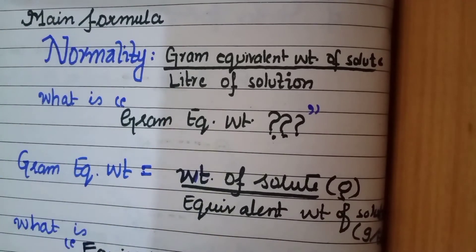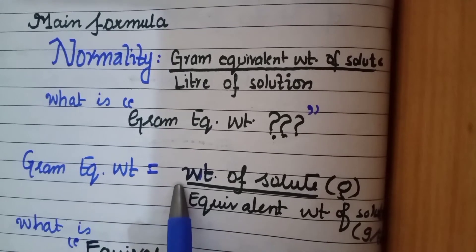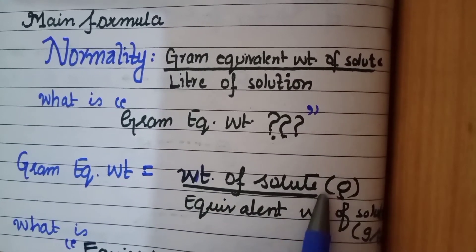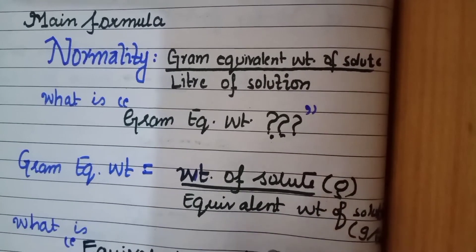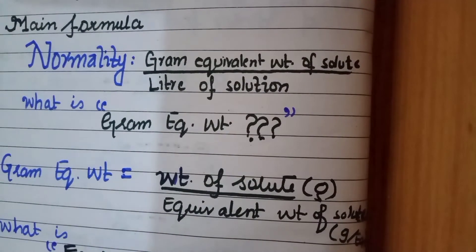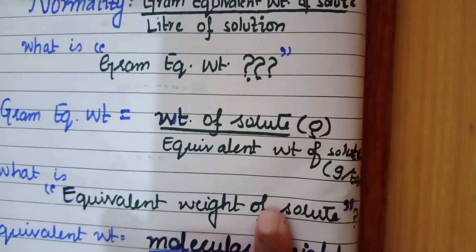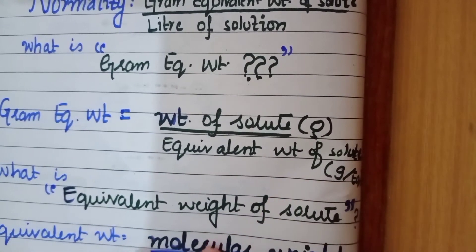So what is gram equivalent weight of solute? It is this way. Gram equivalent weight of solute is equal to weight of solute that is measured in grams divided by equivalent weight of solute. Now this equivalent weight of solute is measured in gram per equivalent.